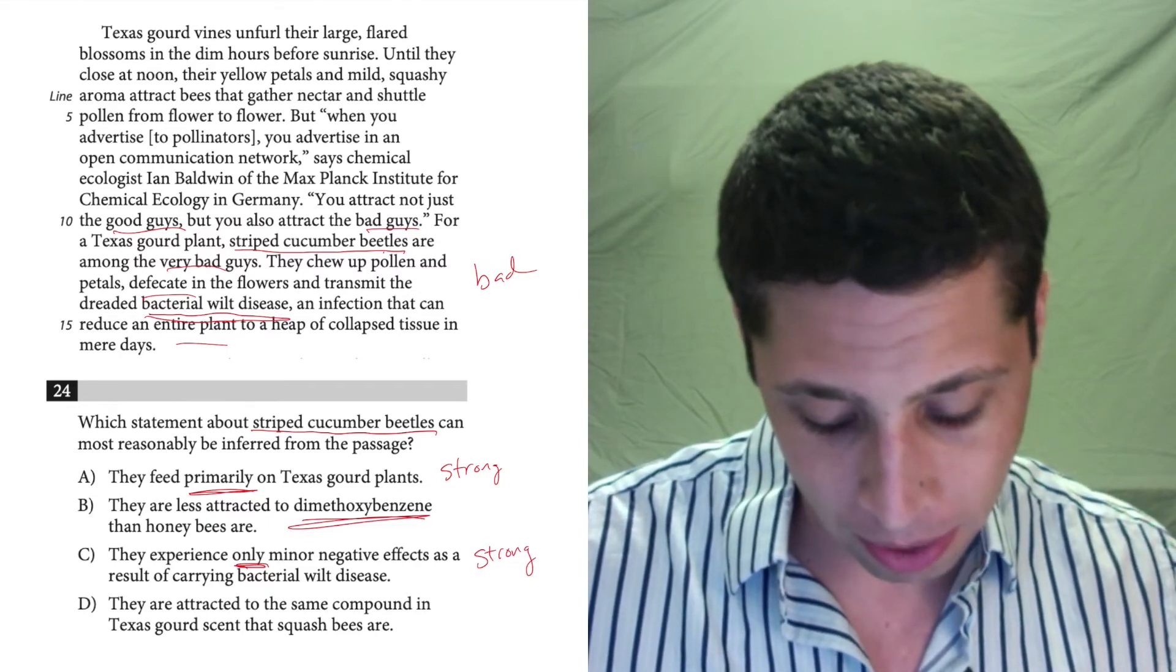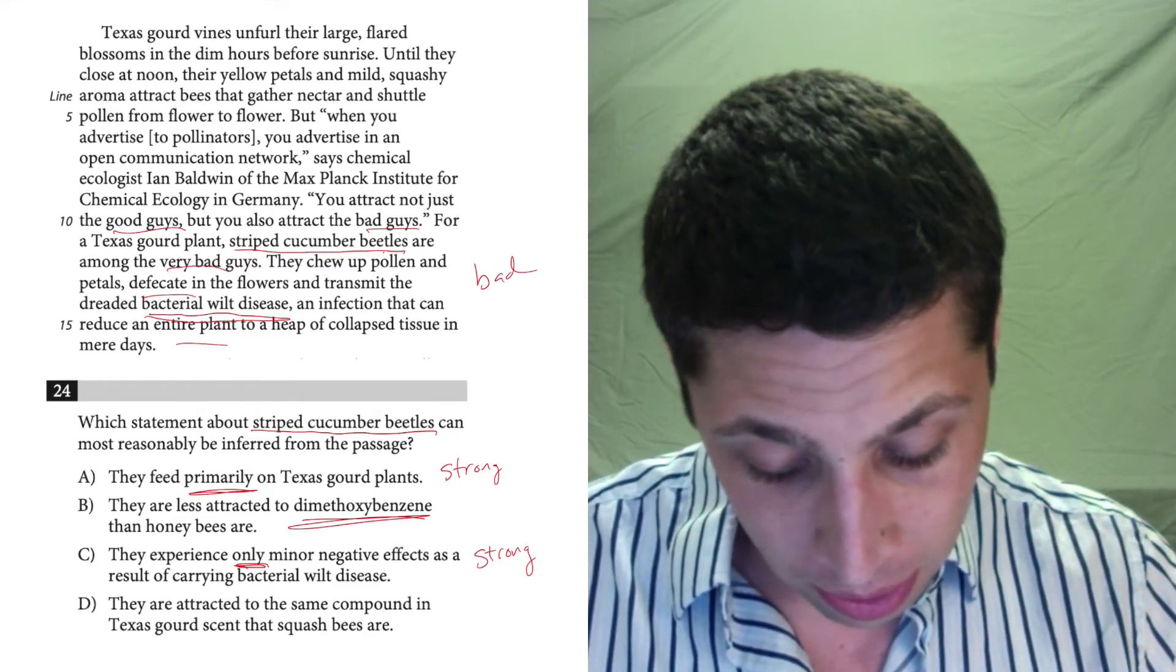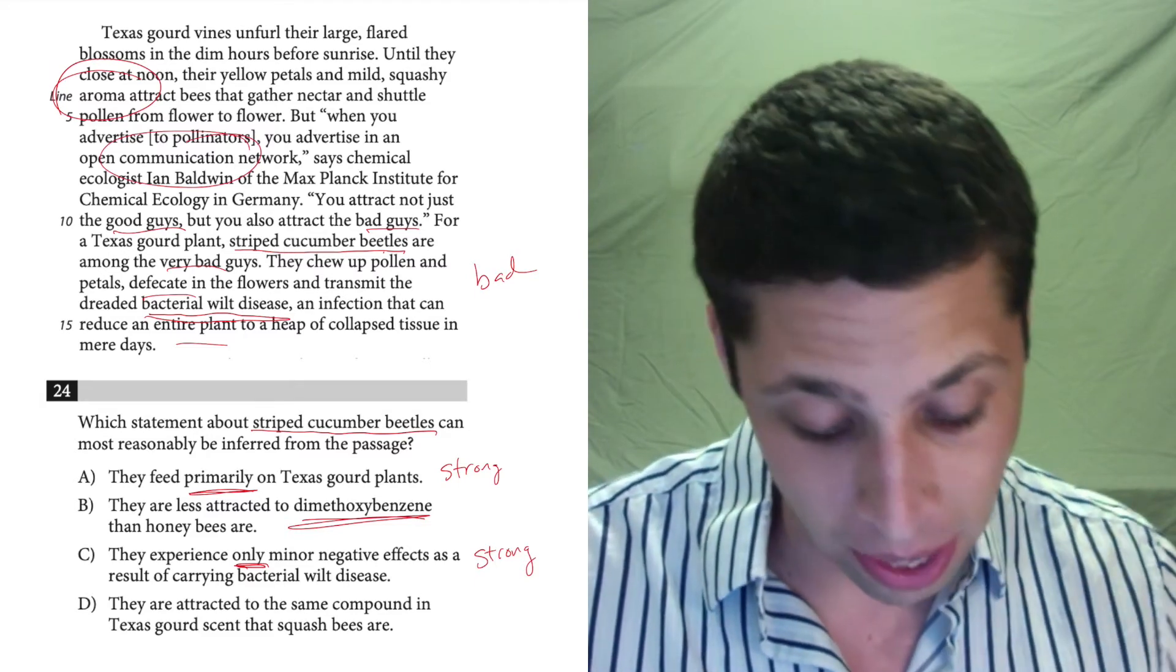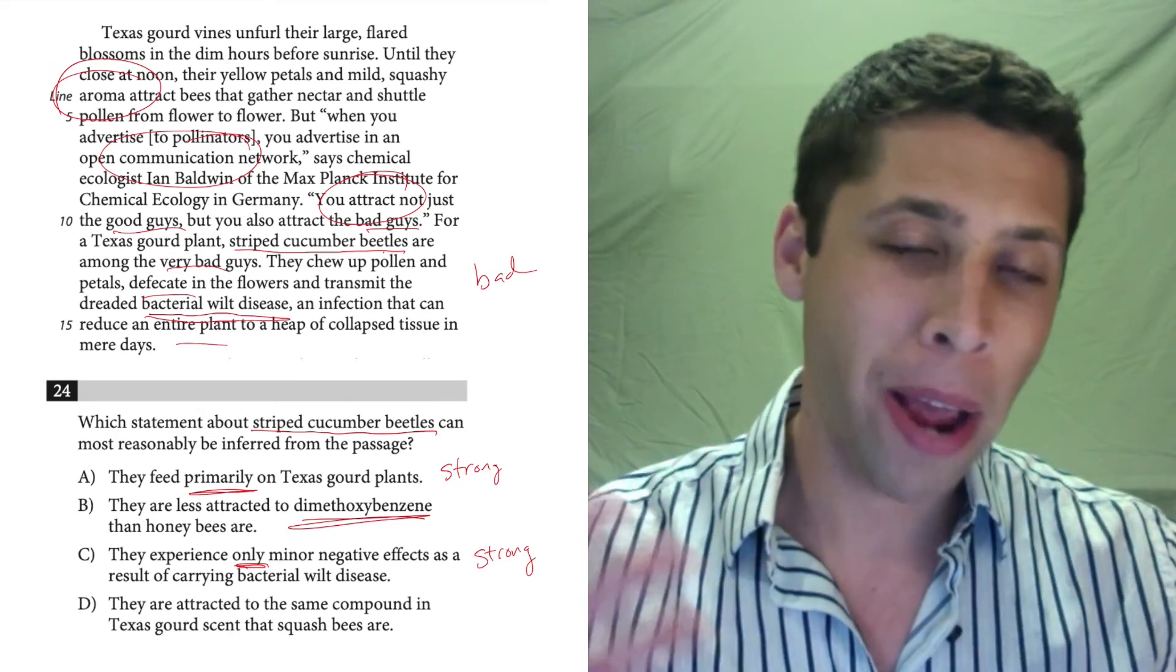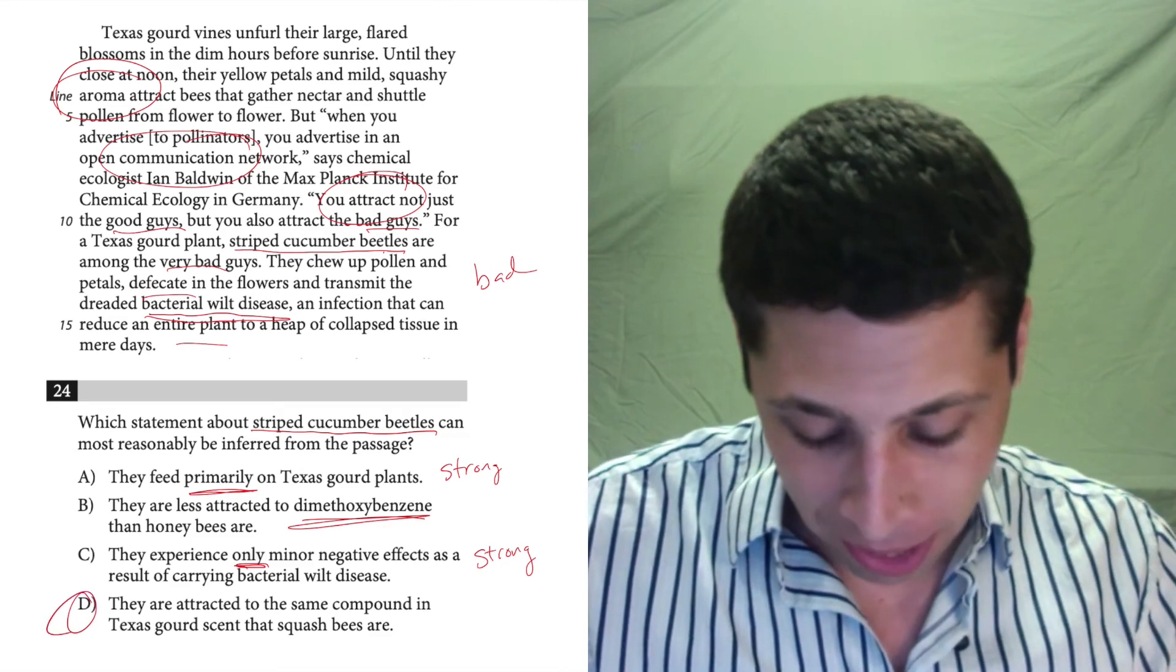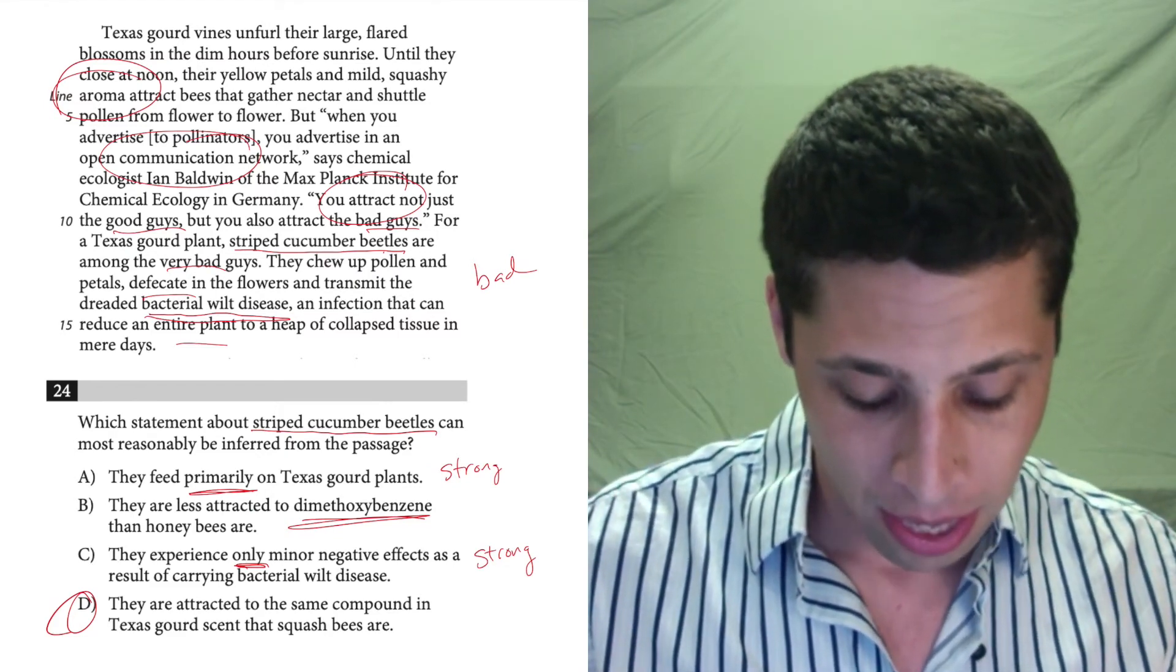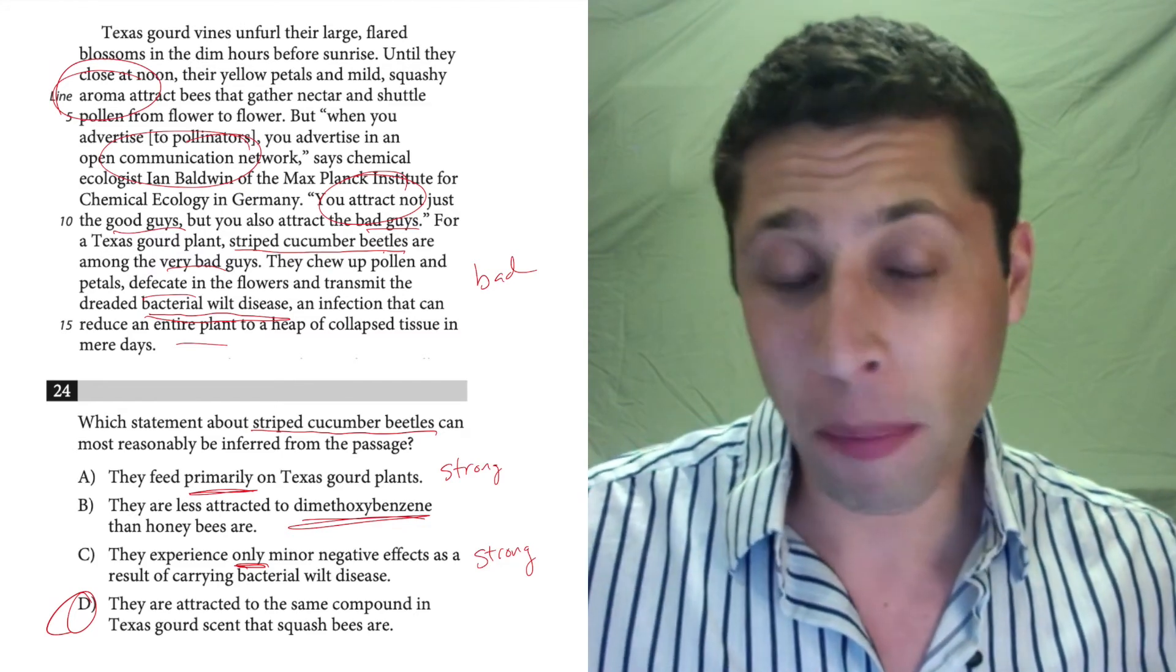They are attracted to the same compound and Texas gourd scent that squash bees are. Well, they're talking about the aroma. Here it is in line four that they use to attract the bees, but that you also are communicating with everybody, and you attract not just the good guys, but also the bad guys. So this paragraph seems to be about how this plant gets the bees and the beetles. And that seems to match with choice D here, that whatever the compound is, I don't really care. Maybe it's this dimethoxybenzene thing, but I don't really care. Whatever the compound is, it's attracting bees and beetles, good guys and bad guys.